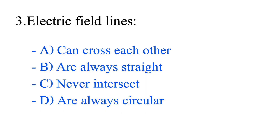Question number 3. Electric field lines: option A, can cross each other; option B, are always straight; option C, never intersect; option D, are always circular. The correct answer is option C, never intersect.